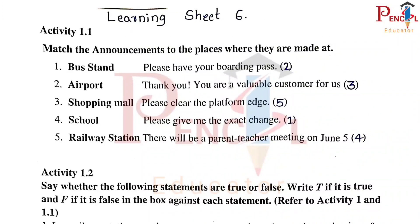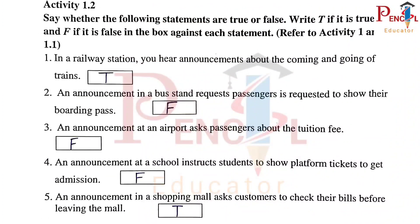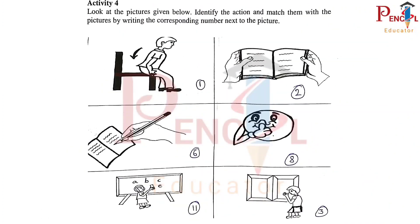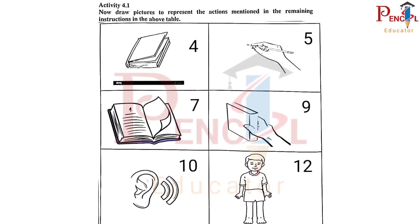Learning Sheet 6 — Matching Announcements to the Places. Activity 1. Activity 4 answers: 1, 2, 6, 8, 11, 3. Second Activity 4 answers: 1, 4, 5, 7, 9, 10, 12.